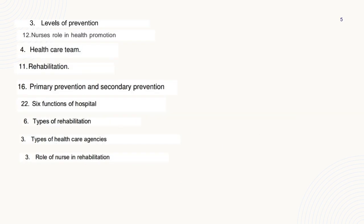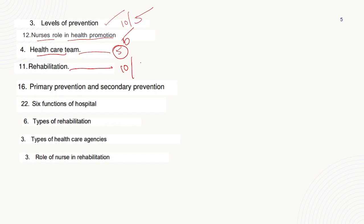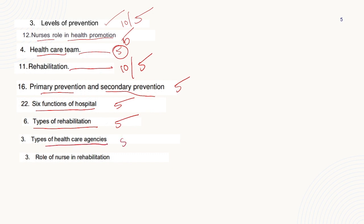You just go for those videos. Study the two units. Levels of prevention: 10 mark and 5 mark. Nurse's role in health promotion, nurse's role in health care team members, rehabilitation — repeatedly 10 mark. Functions of hospital, hospital types — very important. Rehabilitation: types of rehabilitation, 5 mark. Types of health care agencies, role of nurse in rehabilitation — very very important, five mark, repeatedly.